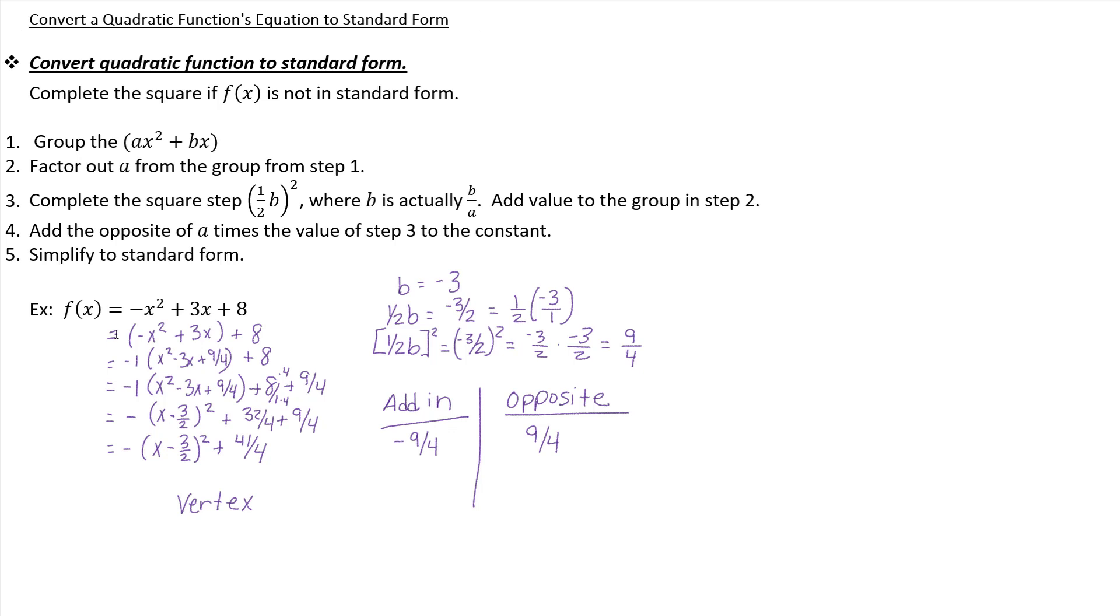Well, in standard form, you can kind of see it. Who's being subtracted off from our x? 3 halves. And who's being added in? K-wise, we see is 41 fourths. So that's the vertex, 3 halves, 41 fourths.